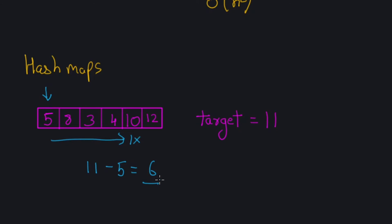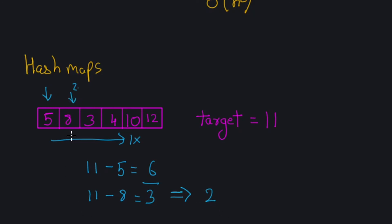When we're on element 5, we look for 6 in the hash map. If it's not there, we move to 8 and compute 11 minus 8 equals 3, then look for 3 in the hash map. The hash map tells us there is a 3 at index 2, so we take the current index and index 2 and put them into our result. Since we only go through the array once, this reduces our complexity from O(n²) to O(n).